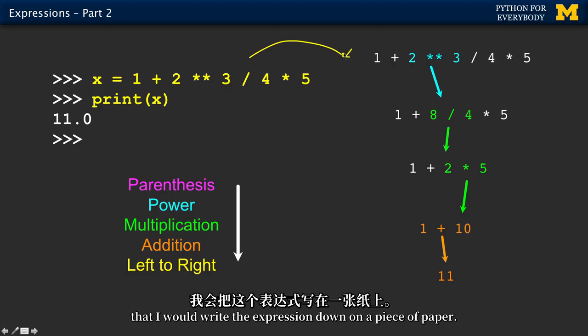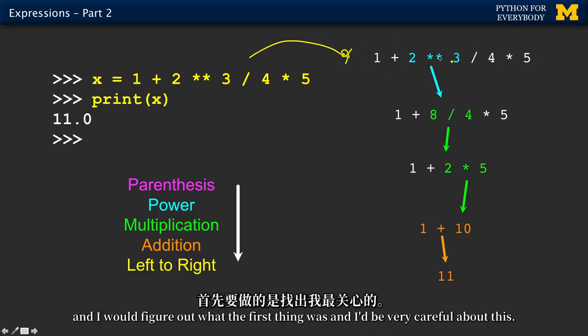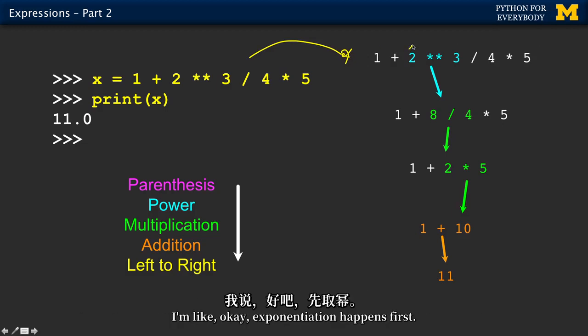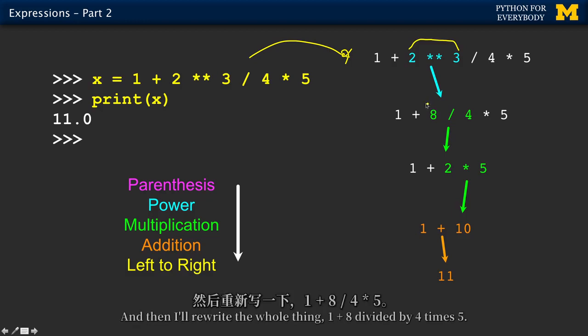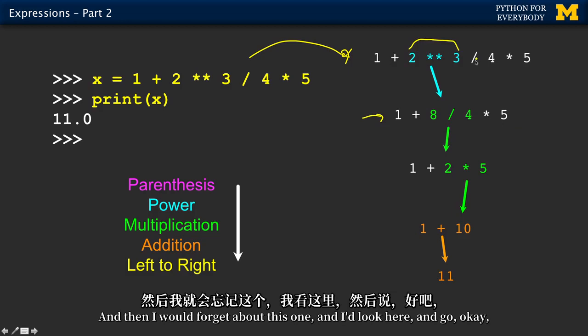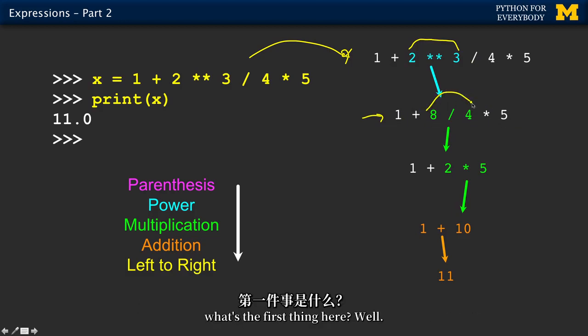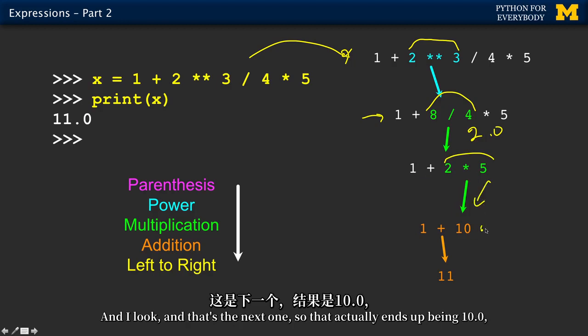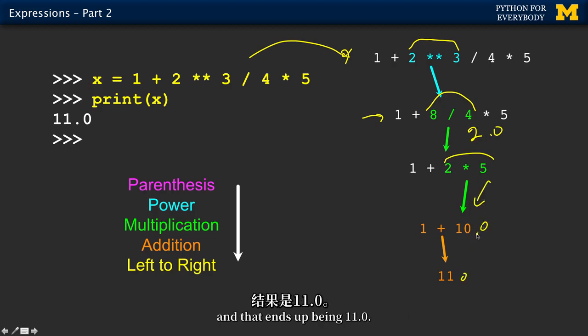But, so the way I used to do these back in the day when I was doing these homework is I would write the expression down on a piece of paper. And then I would look through it and I would figure out what the first thing was. And I'd be very careful about this. And I'm like, okay, exponentiation happens first, so I'll do the 2 to the 3rd power, which is 8. And then I'll rewrite the whole thing, 1 plus 8 divided by 4 times 5. And then I would forget about this one and I'd look here and I'd go like, okay, what's the first thing here? Well, 8 divided by 4 is the first thing there. So then I'd be like, oh, 8 divided by 4, well that gives us 2, in this case it gives us 2.0.